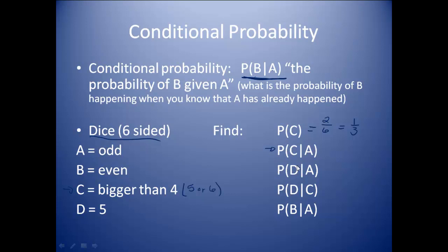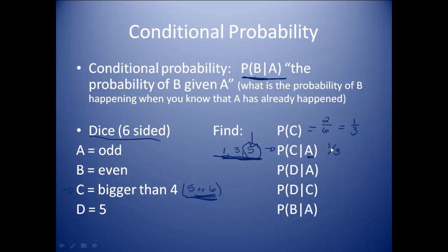This next one is a conditional probability. What's the probability of C given that A has occurred? So it's asking: what's the probability that I rolled a 5 or a 6, knowing that an odd was rolled? There are three odd numbers on this die. I want the probability of rolling a 5 or a 6, so I have one way out of three options. I'm only selecting from three because an odd has already been rolled, and there's only three odds on a die. One of those happens to be bigger than 4, so I have a 1 out of 3 chance.